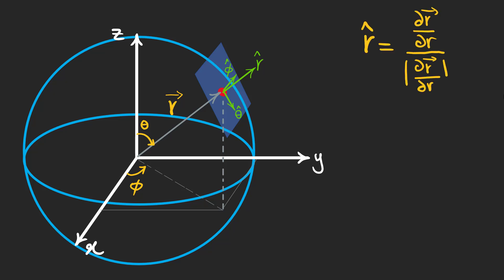To find these unit vectors, we can take the partial derivative of r with respect to each component to find how r changes in this direction and divide it by its magnitude to find the unit vectors.